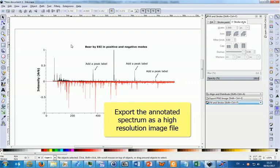Now you've created your fully annotated spectrum, we can save it as a high resolution image file, and we'll need to save that at 600 dots per inch, which is the requirement of most journals.